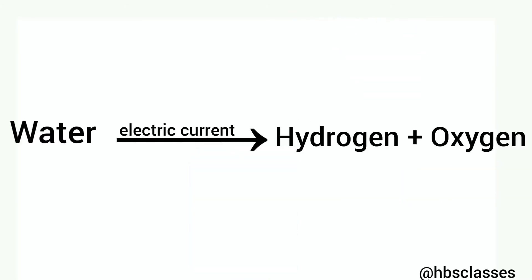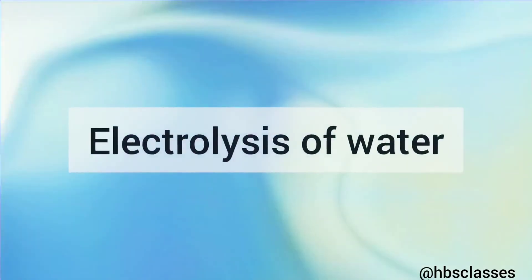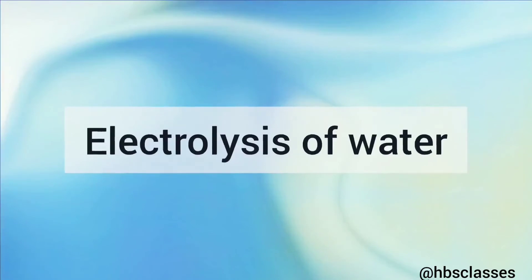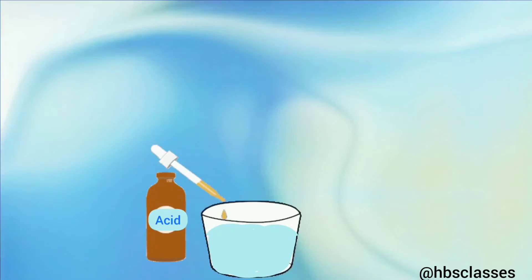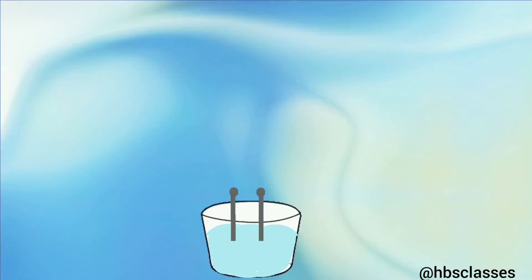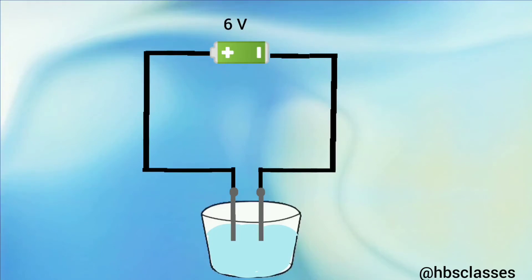Let's understand electrolysis of water through an activity. Take some water in a beaker and add a pinch of salt or a few drops of acid to make the solution conduct electricity. Take two carbon rods as electrodes — carbon does not react easily, so the electrodes do not undergo change during electrolysis. Place the electrodes in the solution and connect them to a battery of six volts.